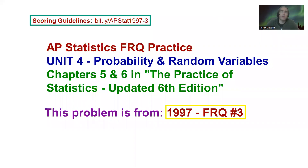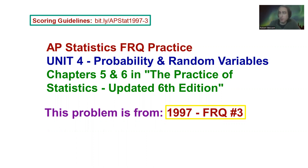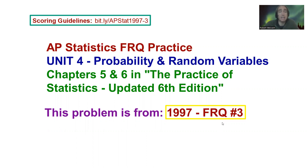This video is going to be going over a free response question dealing with probability and random variables. If you have the Practice of Statistics updated 6th edition textbook, this correlates to chapters 5 and 6, and this is unit 4 in the AP Statistics CED. This is from 1997 free response question number 3 — actually the first year that the exam was given. Fun fact.